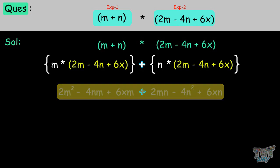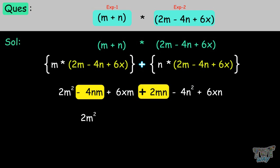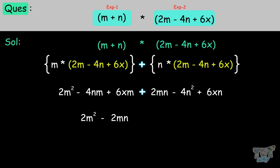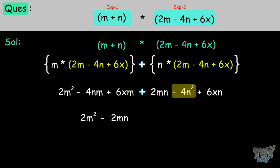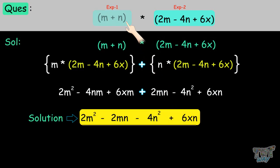N times 2M is 2MN, N times 4N is 4N squared, and N times 6X is 6XN. Since we are adding, we can remove the round brackets without reversing any signs. Now let's find like terms: 2M squared has no like terms. Negative 4NM and positive 2MN are like terms — even though the variables are in different order, they combine to give negative 2MN. 6XM, 4N squared, and 6XN have no like terms. This is the product of the binomial and trinomial.